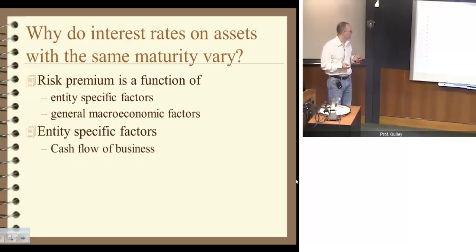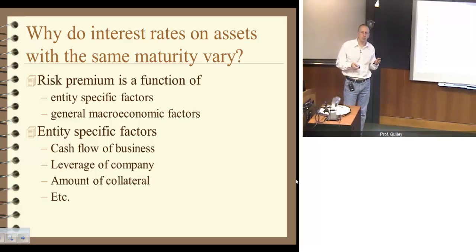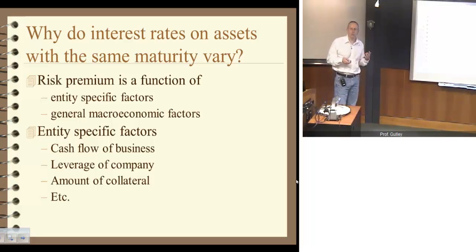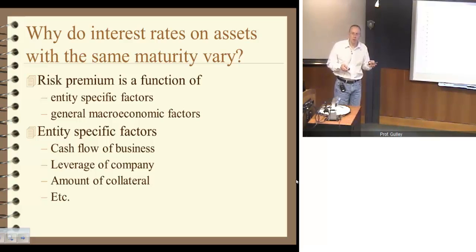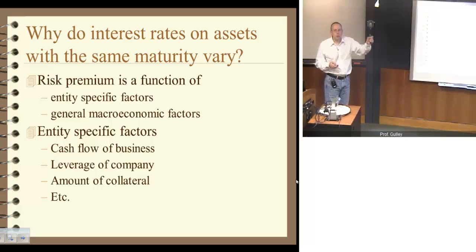Entity-specific factors — there are many of these, we'll just do a few: the cash flow of a business, the leverage of a company, and the amount of collateral. To use a specific case, suppose that the cash flow of a business rises. That'll make it more likely that they'll be able to make their interest payments and pay off the debt when it matures. And so, other things equal, that would tend to reduce the risk premium and reduce the interest rate on a bond.